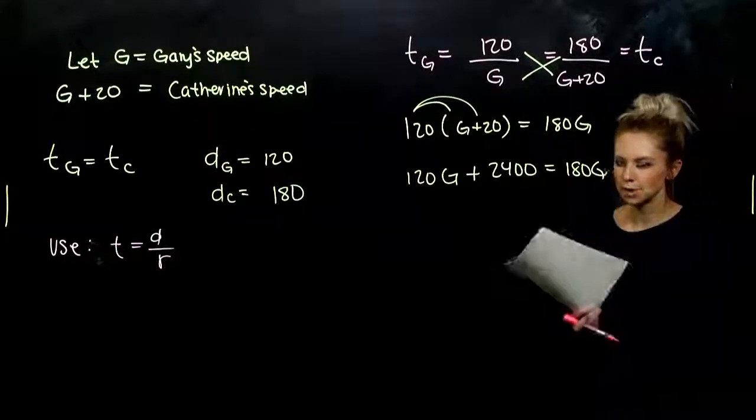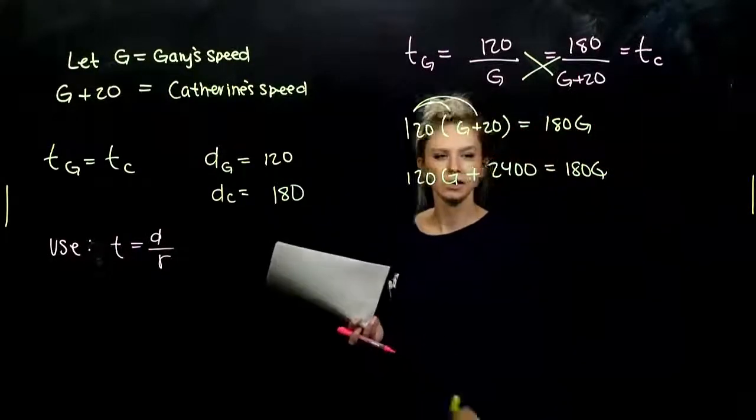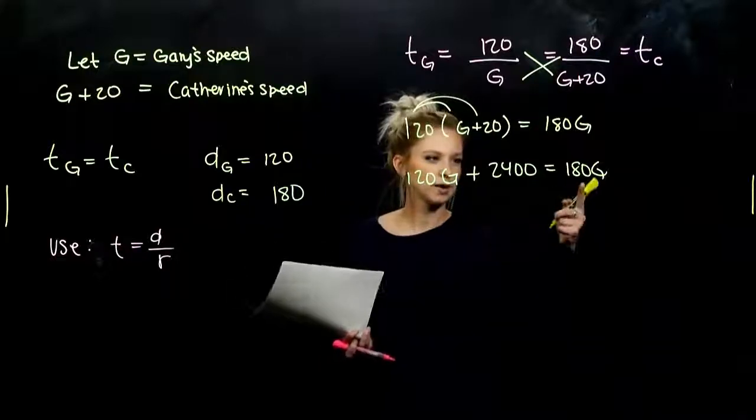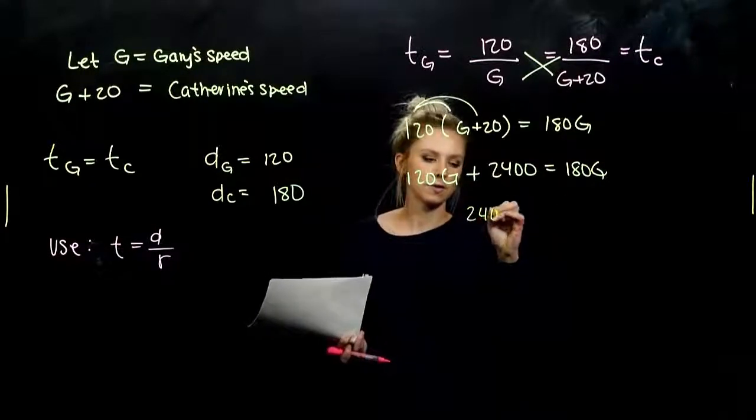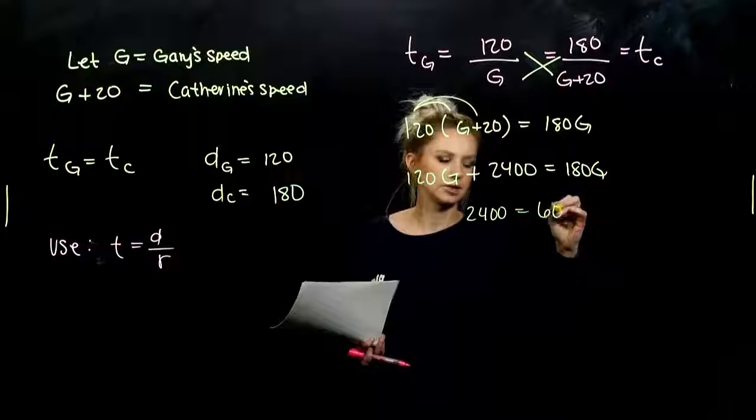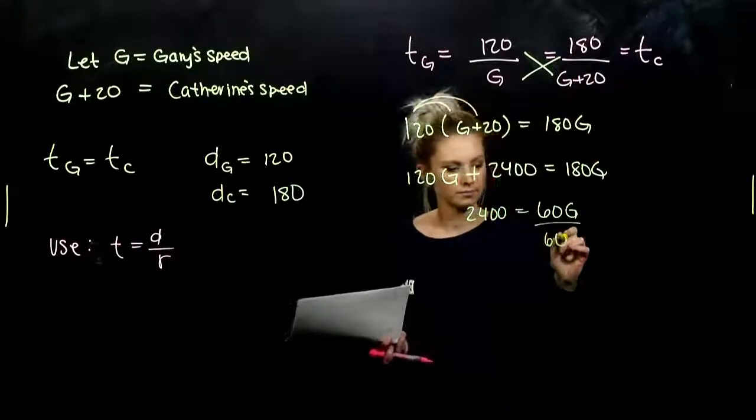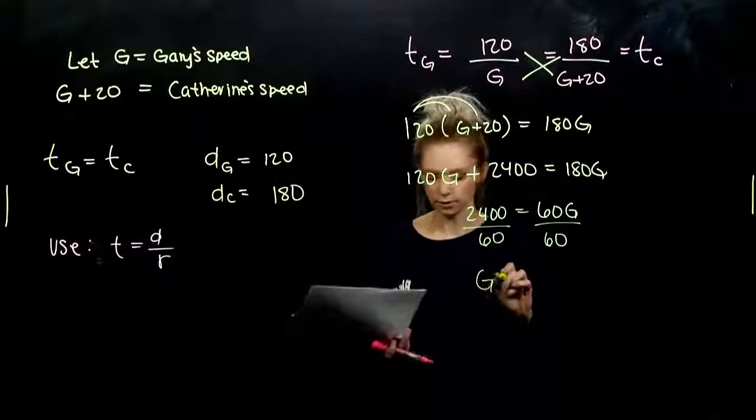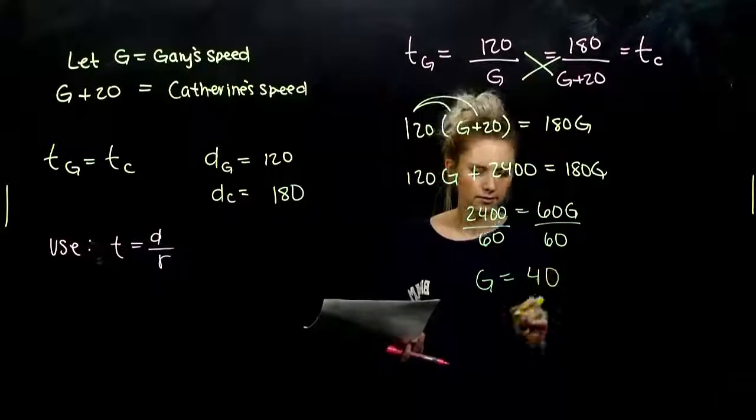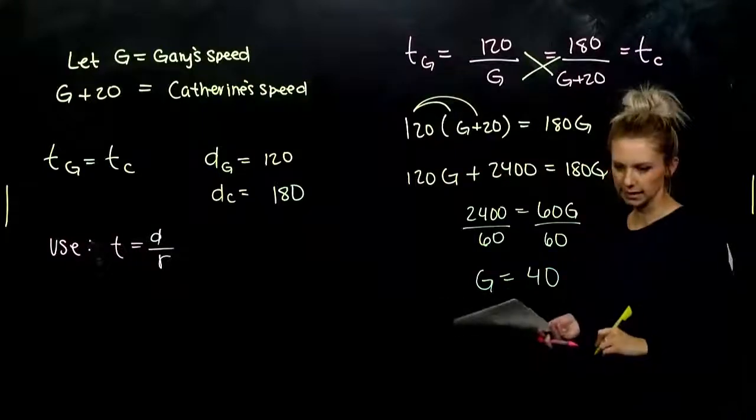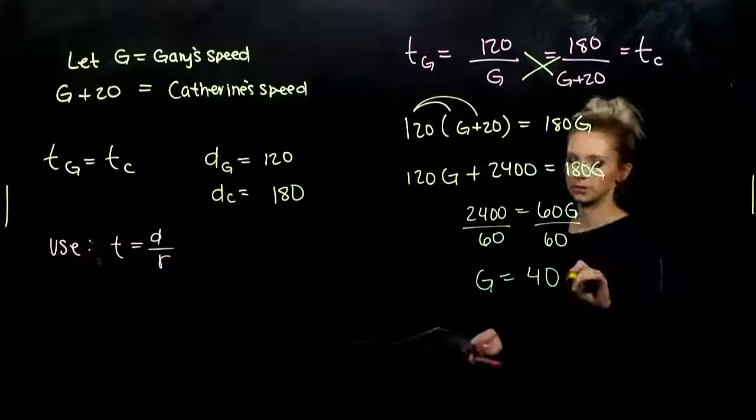So I need to combine my G's together. I need them on the same side. So if I subtract 120 from both, I've got 2,400 is 60 G. And I need G on its own. So we'll divide by 60. So Gary is going at 40 miles per hour. We want to put units on there.